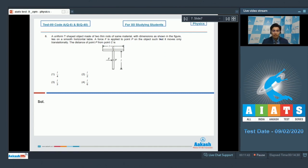Dear students, it is given that the object moves only translationally, which means that the torque on this body about the center of mass should be zero. And when the torque on the body about the center of mass is zero, it means that the force which is acting on the body must pass through the center of mass itself.